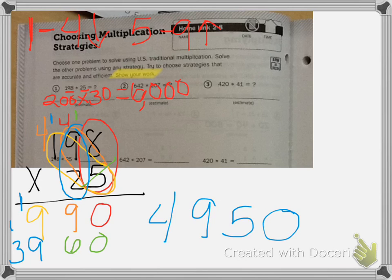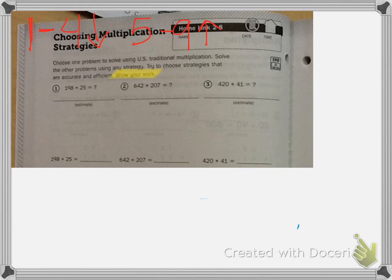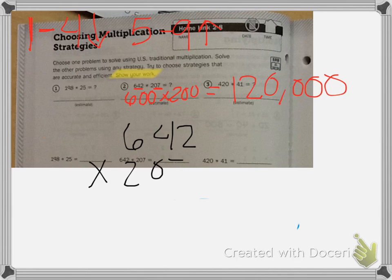Let's look at number 2. Make sure you have this copied down for number 1. Number 2: I'm going to estimate 4, we're going to round down to 600. And 200, we're going to round down to 200. That gives us 120,000. Now let's do our multiplication. I like the U.S. traditional model, so I'm going to stick with it. So I have 642 times 207. 7 times 2 is 14, carry my 1. 7 times 4 is 28, plus 1 is 29. 7 times 6 is 42, plus 2 is 44.